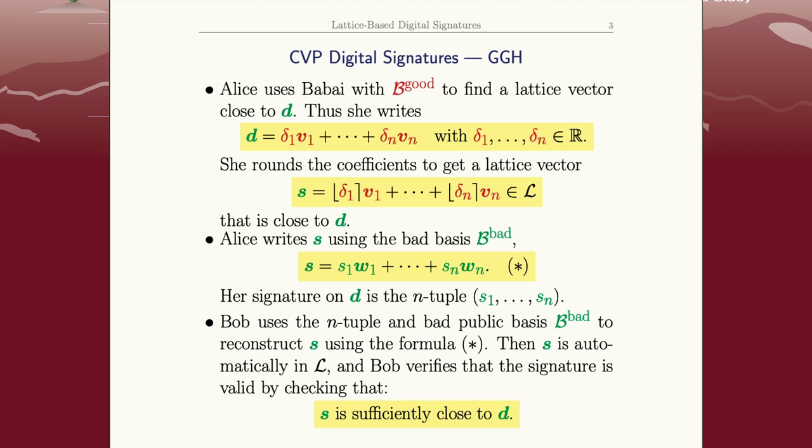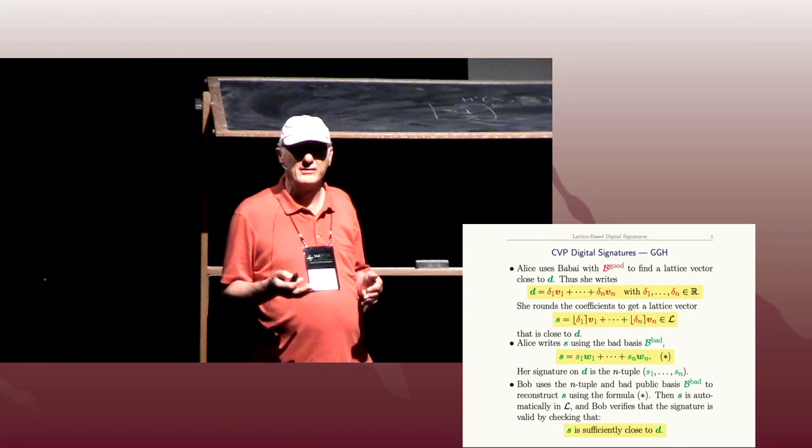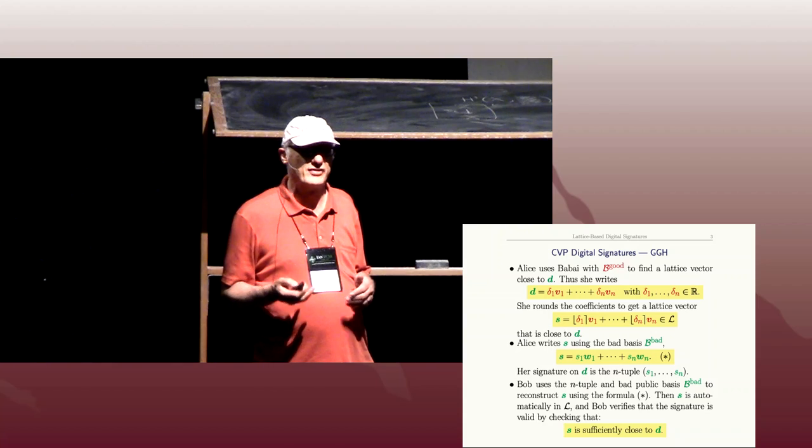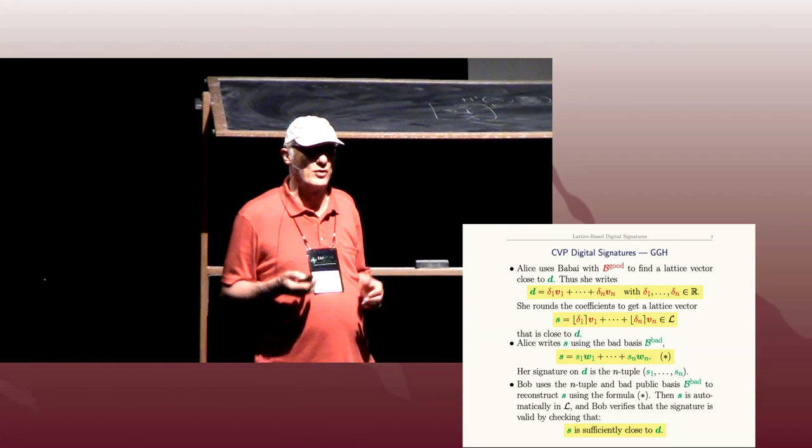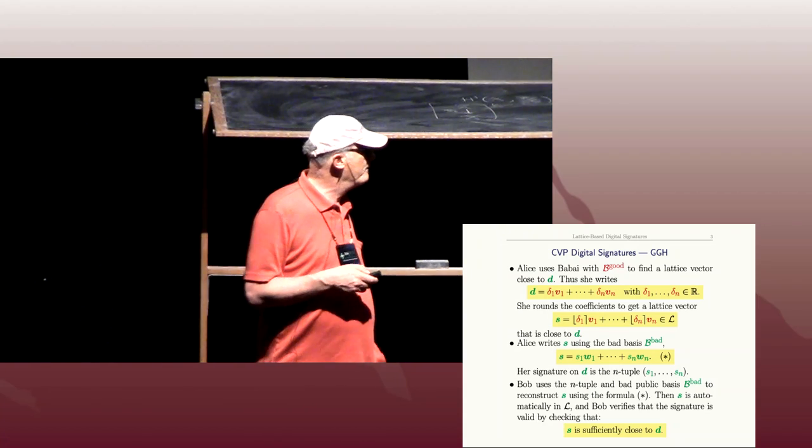How does Bob check? He uses the s_i's and the public w's to reconstruct the s, and then he checks that s is sufficiently close to d. Now, the words 'sufficiently close' are not rigorous mathematical terms, but what that really means depends on the parameters—what n is, how big the coordinates of the v's that you chose originally were, and stuff like that.